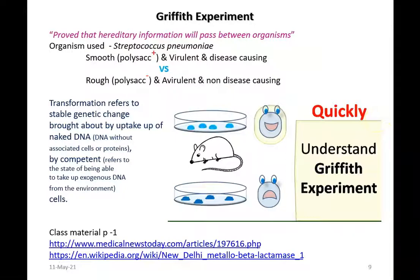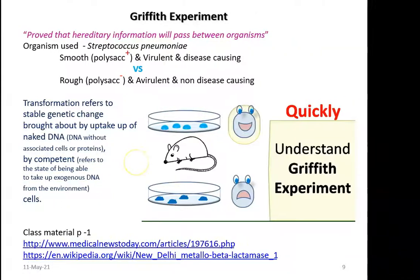Among the various horizontal gene transfer phenomena, transformation plays an important role and is widely occurring in microorganisms, especially in bacteria. The transformation phenomenon was understood after the conduct of the Griffith experiment. Frederick Griffith proved that hereditary information can pass between organisms. The organism he used was Streptococcus pneumoniae. He used two different types of cultures: one smooth, polysaccharide-containing virulent and disease-causing strain, and another rough, polysaccharide-minus strain.